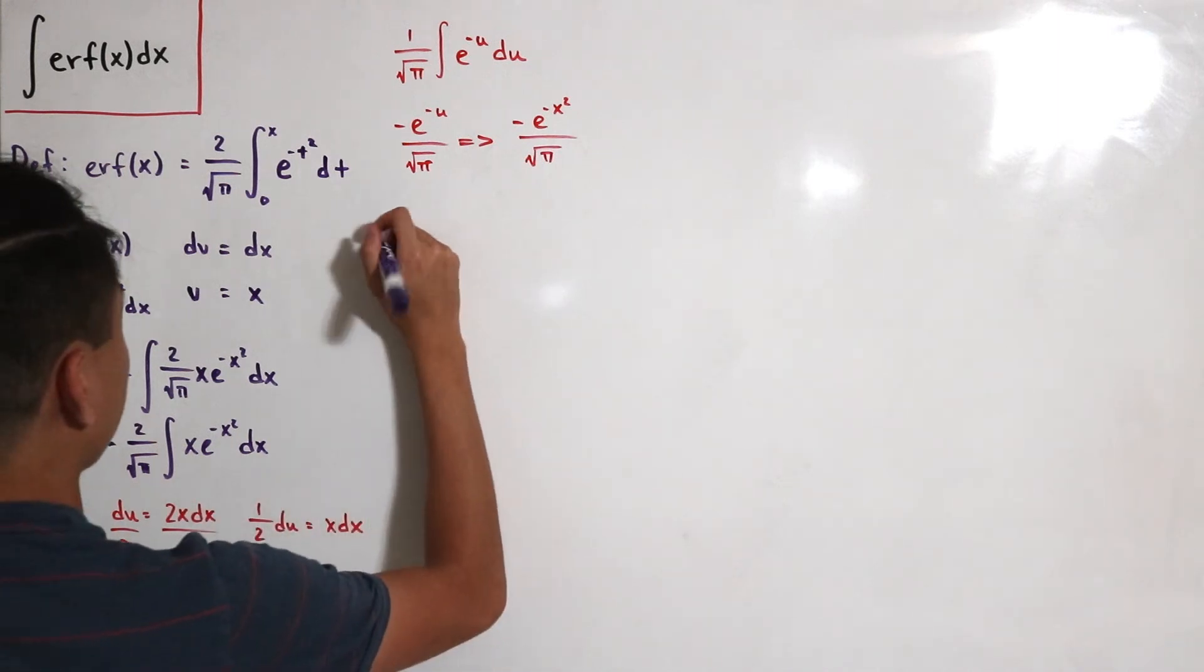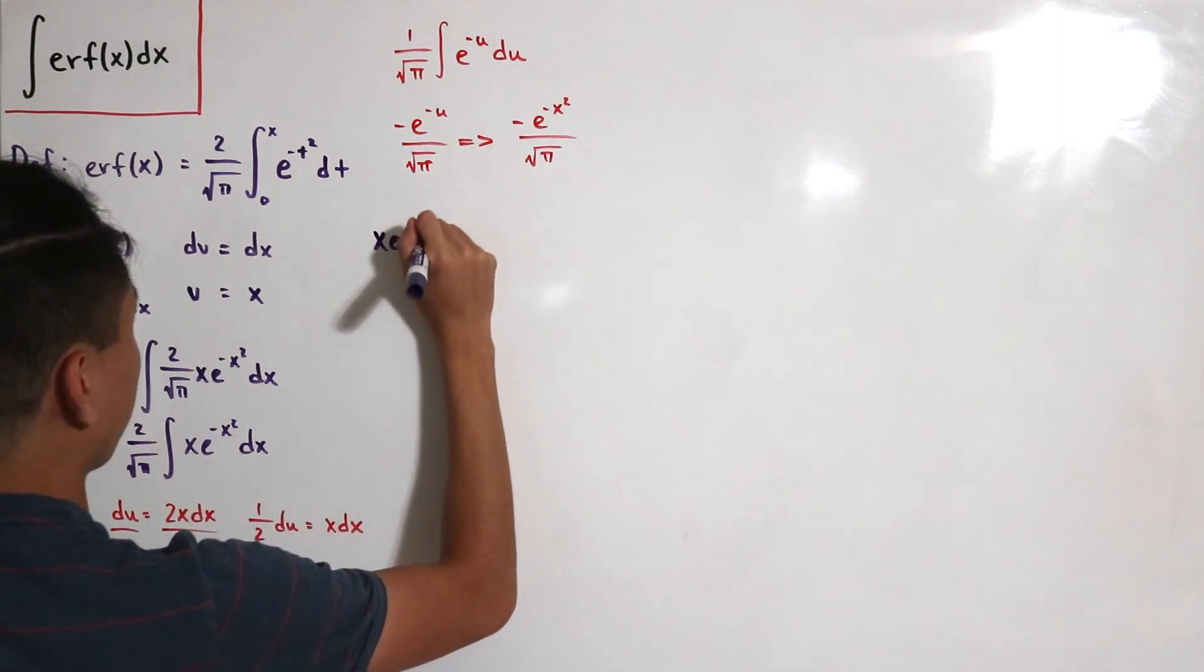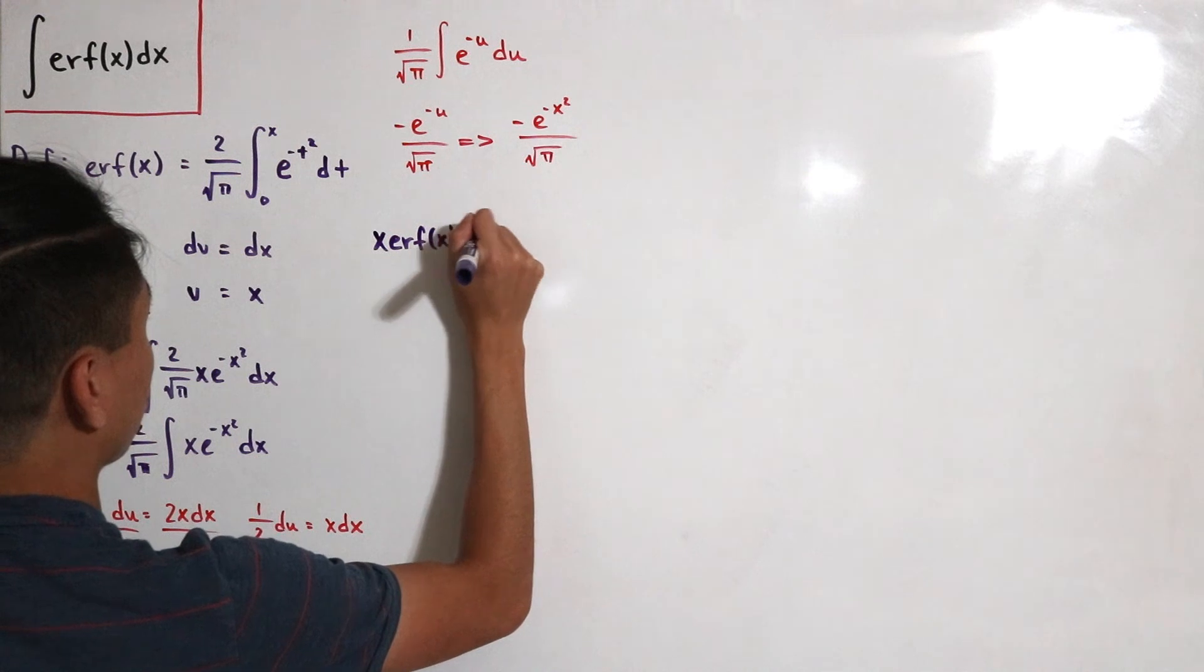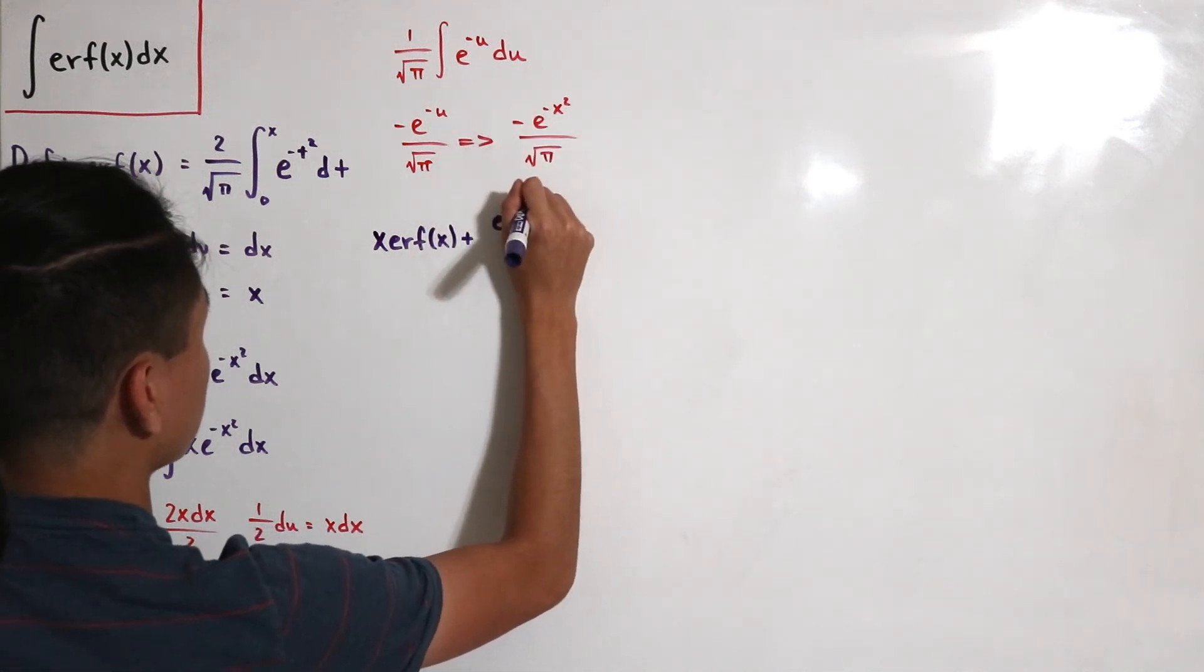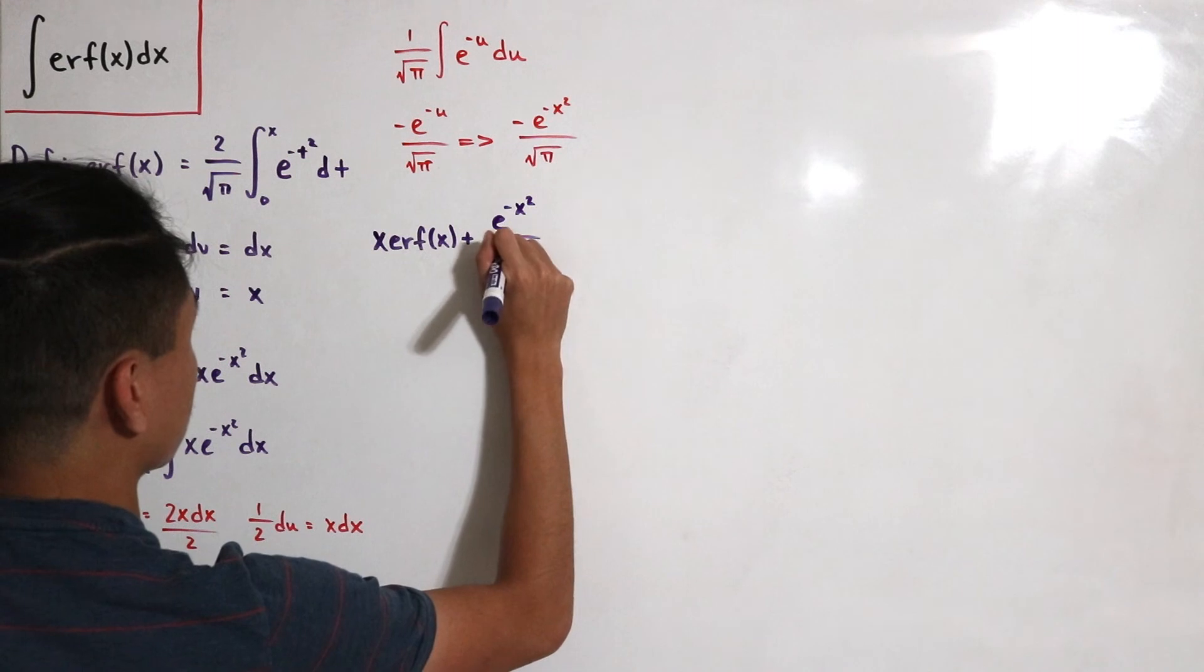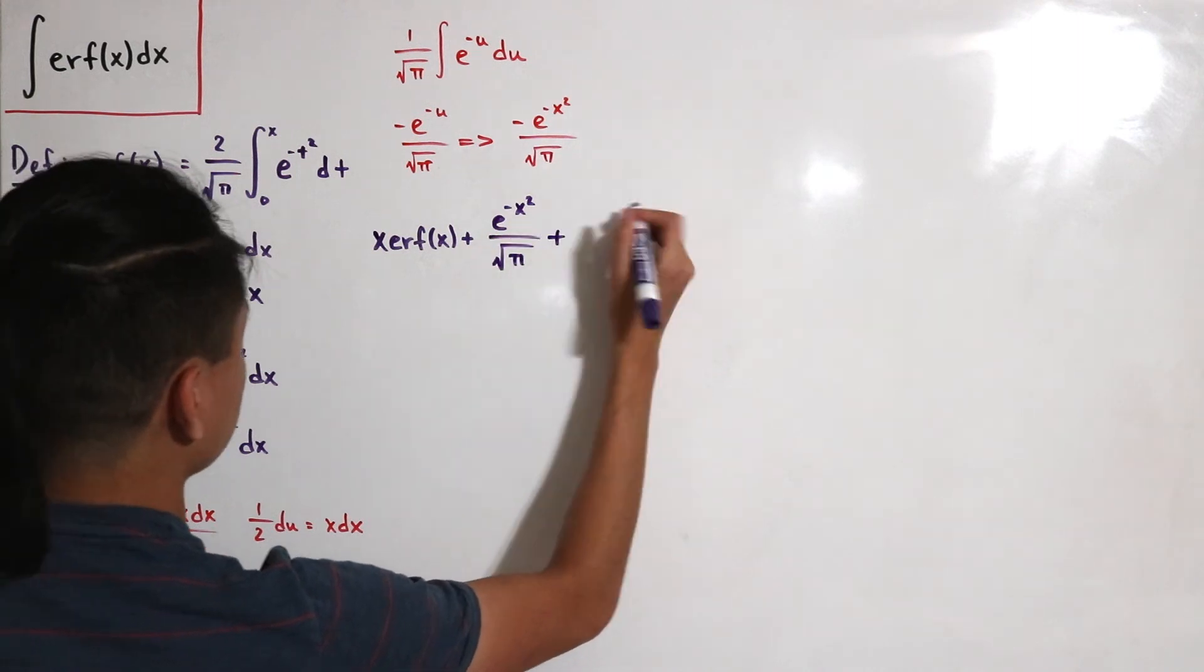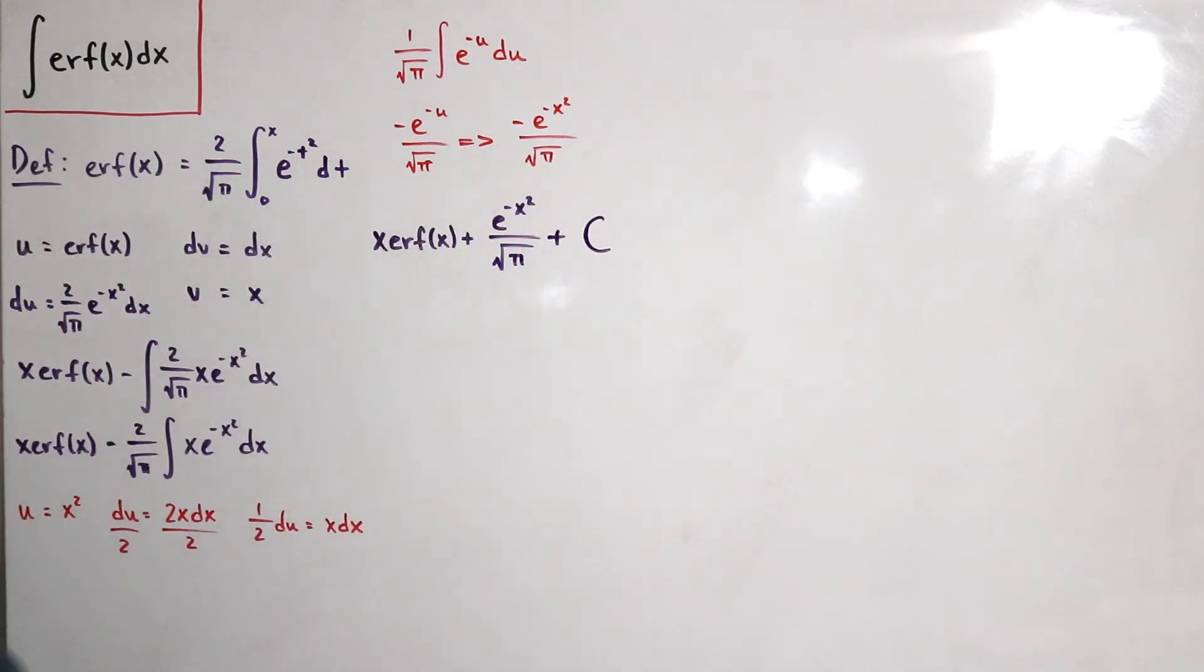So we have that it'd be x times the error function of x plus e to the negative x square divided by the square root of π. And then since this is an indefinite integral don't forget to add your C.